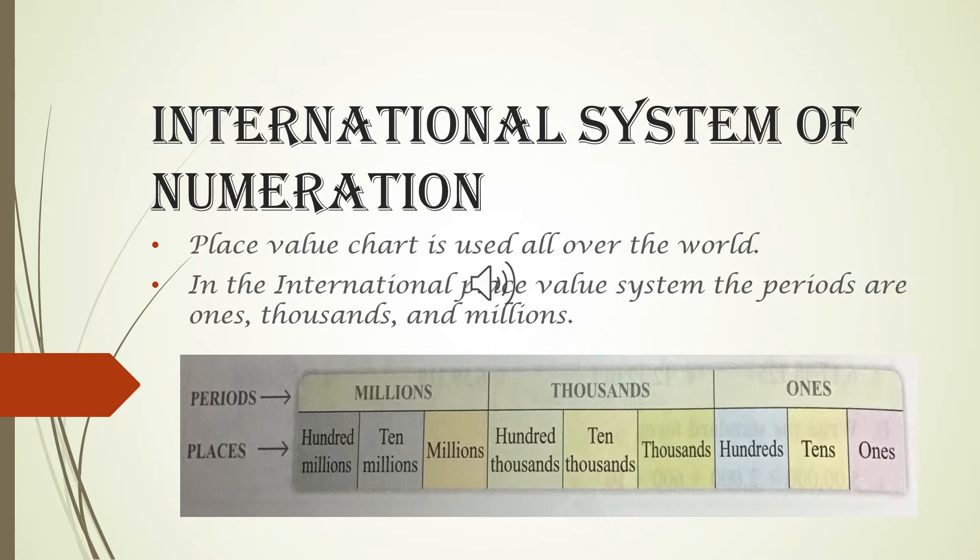Look at this table. It shows the periods, the places and the place values in this system. Here, each period consists of three places.